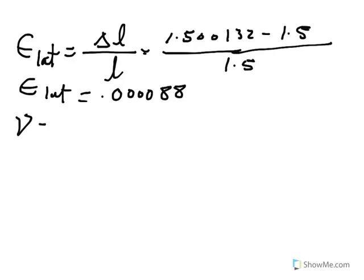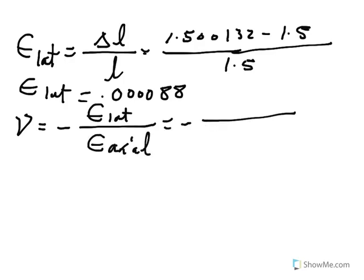Let's go ahead and calculate the Poisson's ratio. Remember, Poisson's ratio is negative of the lateral strain divided by axial strain. Lateral is the one that we have here, 0.000088.